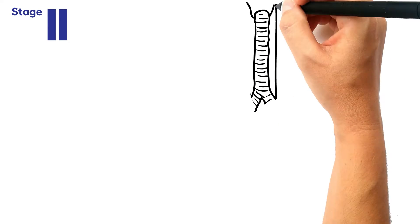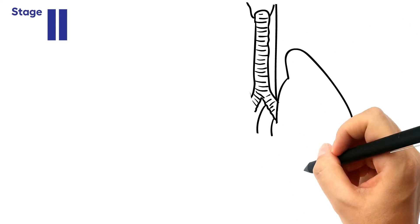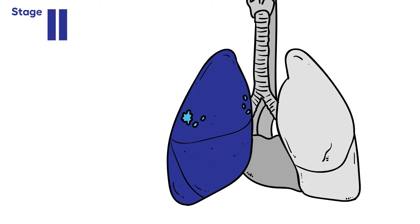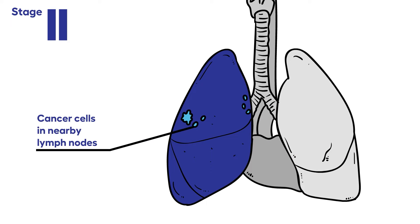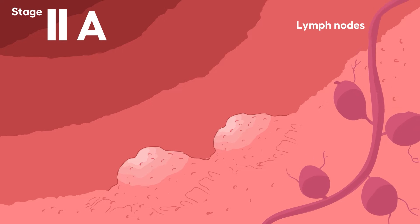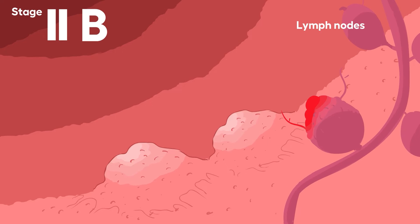Stage two non-small cell lung cancer. The cancer is found early but has spread inside or just outside of one lung and may have spread to nearby lymph nodes on the same side of the body. It is divided into substages 2a and 2b based on the tumor size and whether it has spread to certain nearby lymph nodes and other lung structures.